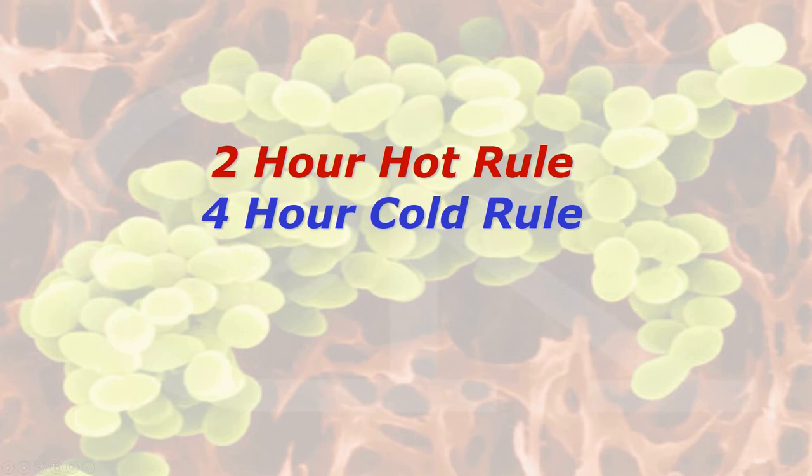The four-hour cold rule: say you have sandwiches or high-risk food in a chiller cabinet between 1 and 4 degrees C and the chiller breaks down. The food starts to rise in temperature and you have four hours to sell that food. Within four hours bacteria can multiply quite substantially, so by the end of the four hours everything must be sold.